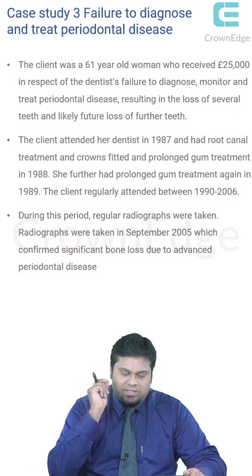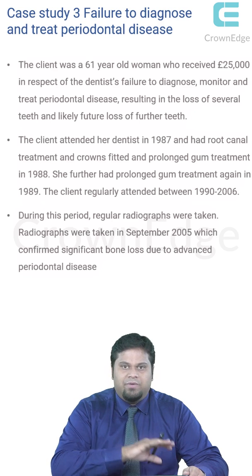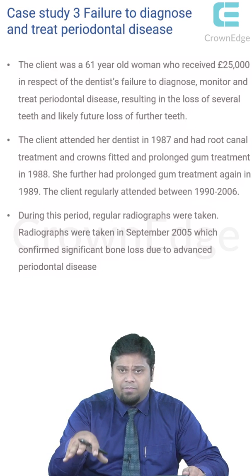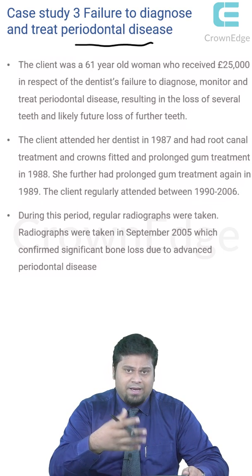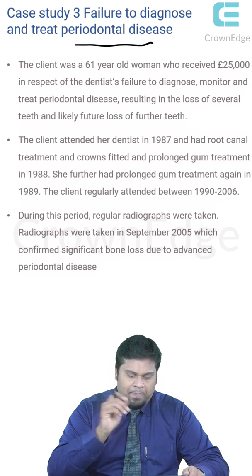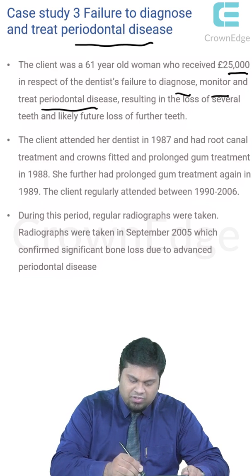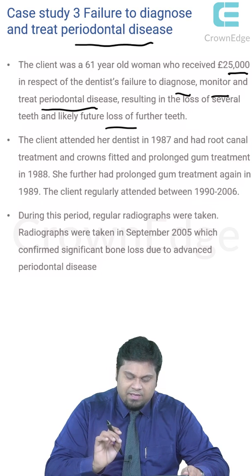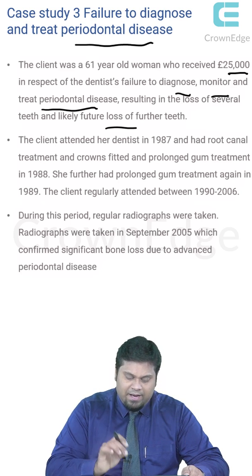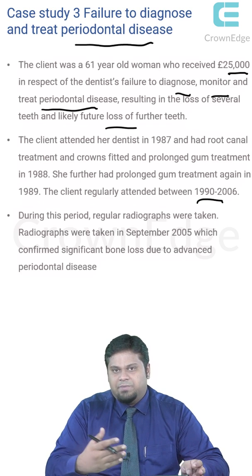Case study three deals with failure to diagnose and treat periodontal disease. Here the client was a 61-year-old woman who received 25,000 euros in respect of the dentist's failure to diagnose, monitor and treat periodontal disease, which led to the loss of multiple teeth and likely future tooth loss. The client attended her dentist from 1987, had root canal treatment and crowns fitted, and received prolonged gum treatment in 1987 and again in 1989. The client regularly attended between 1990 to 2006 — a span of about 15–16 years of continuous treatment.